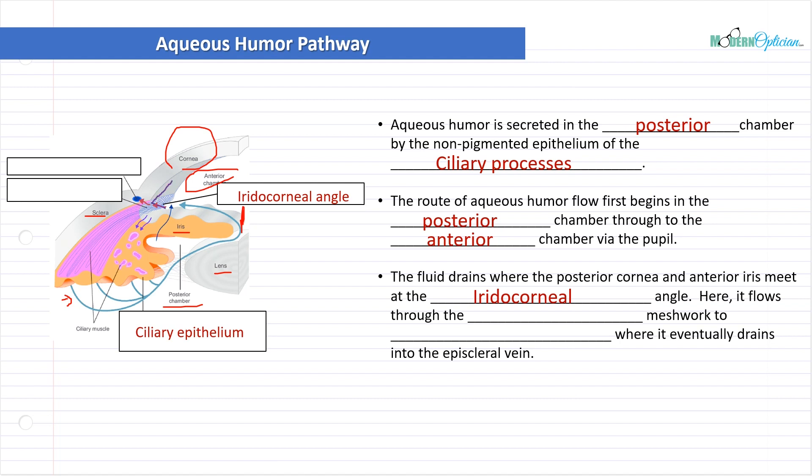It's very important when we start assessing people for risk of glaucoma and things like that. Here it flows through the trabecular meshwork to the Schlemm's canal, where it eventually drains into the episcleral vein, goes down into the blood system, and it gets worked out that way. So I want you to really think about this.